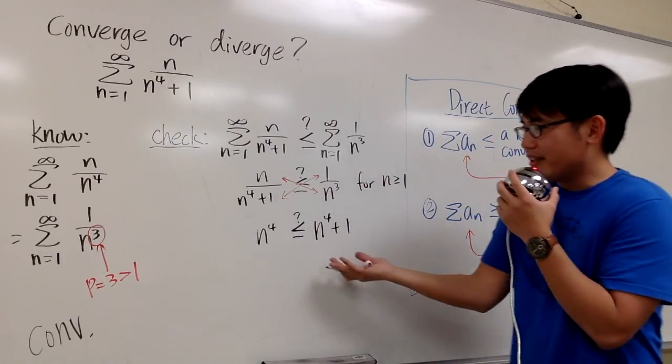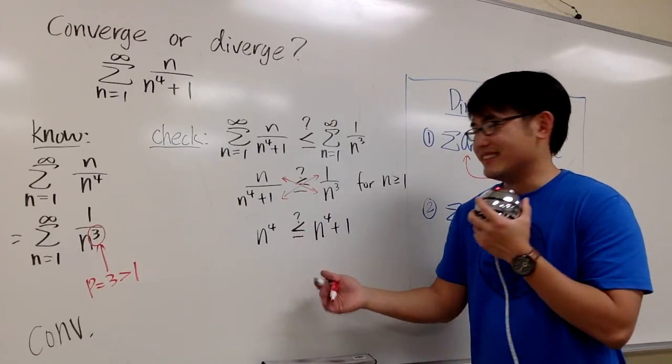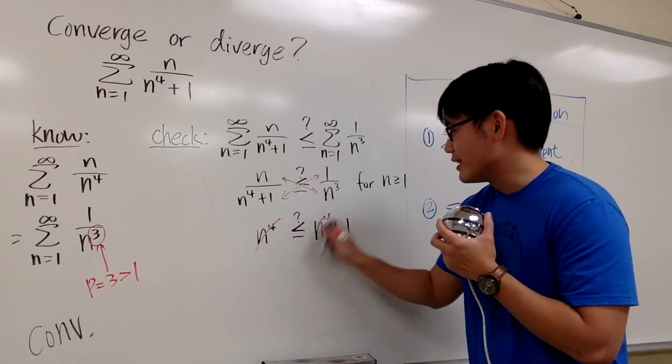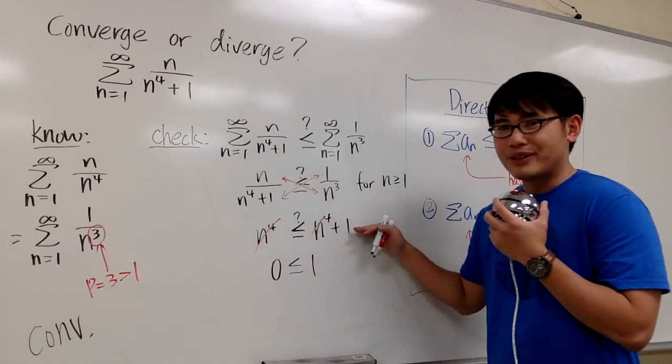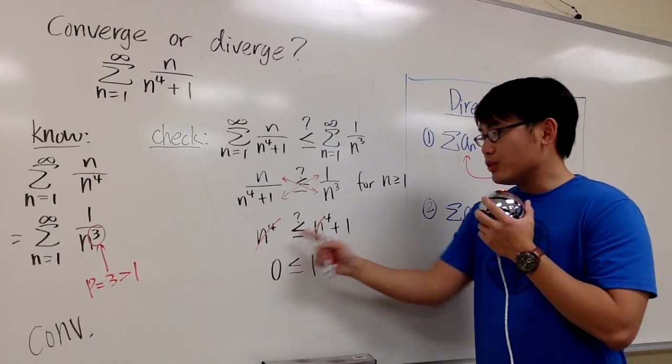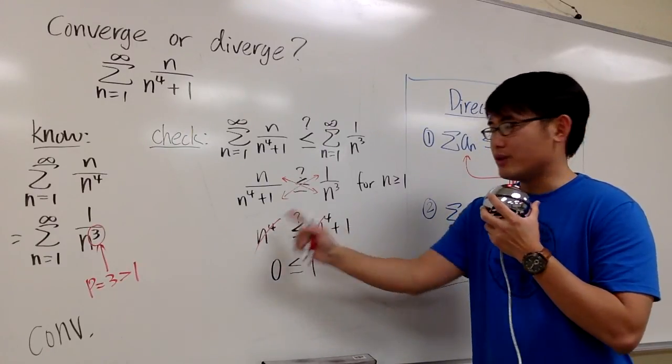This is pretty clear at the moment. But if you want to be even more clear than this, you can minus n to the fourth on both sides and say 0 is less than or equal to 1. But you could have stopped right here anyways. We can only do that when the powers are exactly the same, n to the fourth and n to the fourth, and we get to cancel them out.